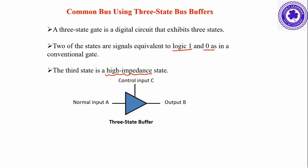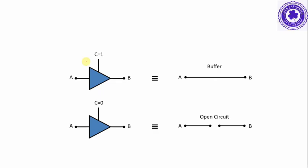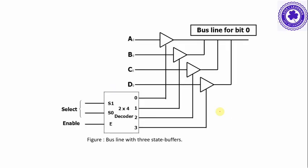A typical three-state bus buffer has an input A, an output B, and a control input C. This buffer exhibits three states. When the control input is 1, the input is connected to the output and it acts as a buffer. When the control input is 0, the input is not connected to the output — it is an open circuit.